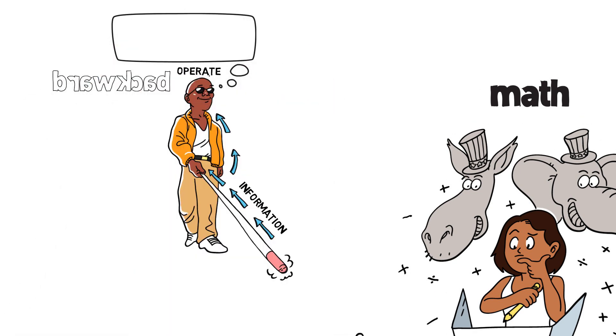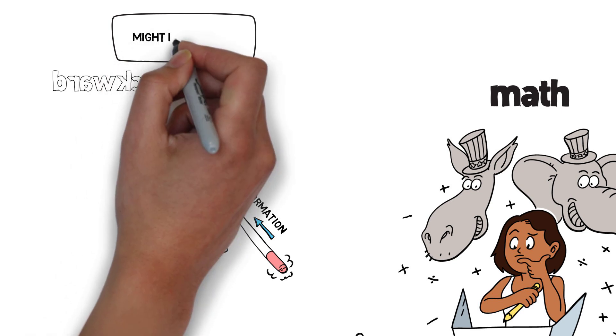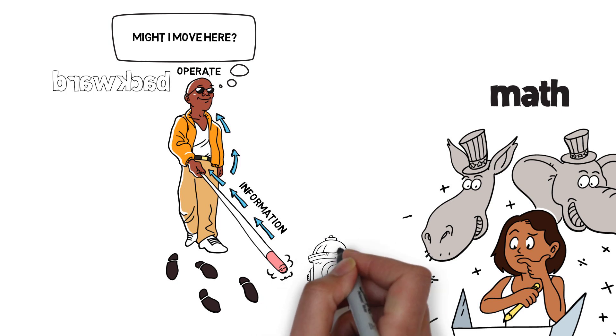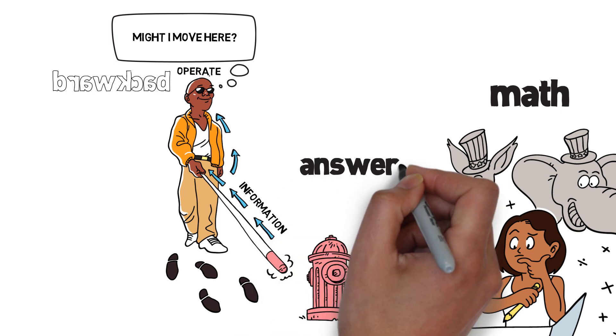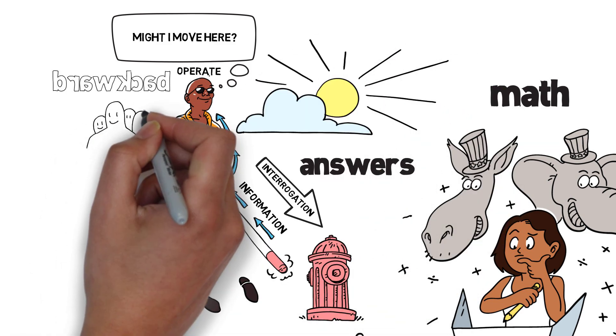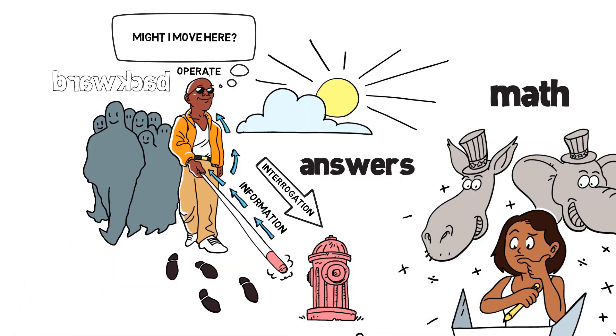The blind person is obviously asking questions of the world. Might I move here? Can I walk here? Will I bump into something if I take another step forward? The stick is just providing answers to an interrogation about the world, a purposeful set of questions about what he or she might do.